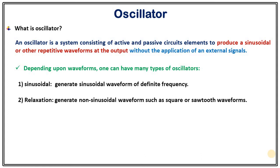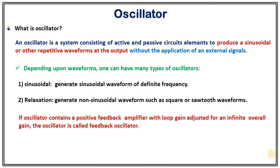In order to construct an oscillator there are two different principles one can use. The first one is either we can use feedback network or we can use negative resistance idea. So when oscillator contains a positive feedback amplifier with loop gain adjusted for an infinite overall gain.